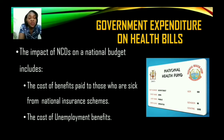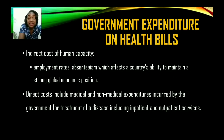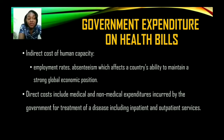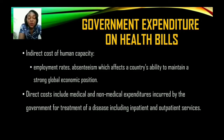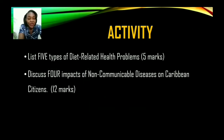In some countries, persons who are unemployed due to health illness may receive income or a stipend from the government. The government is also impacted by indirect costs related to human resource capacity — employment rates and absenteeism affect a country's ability to maintain a strong global economic position. Direct costs include medical and non-medical expenditures incurred by the government for treatment of diseases, including inpatient services for those admitted to hospitals and outpatient services at health centers.